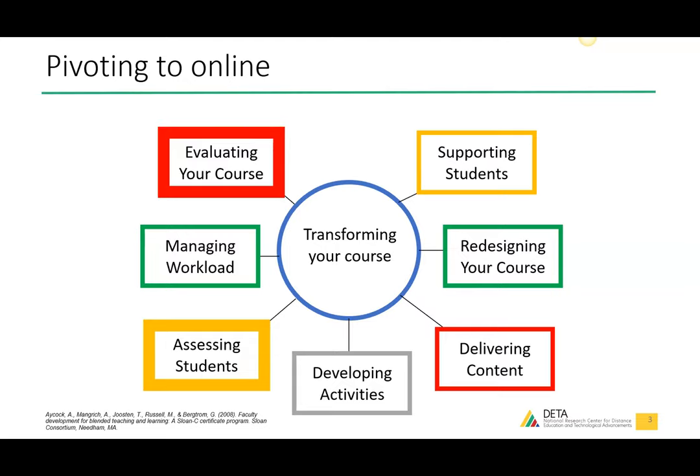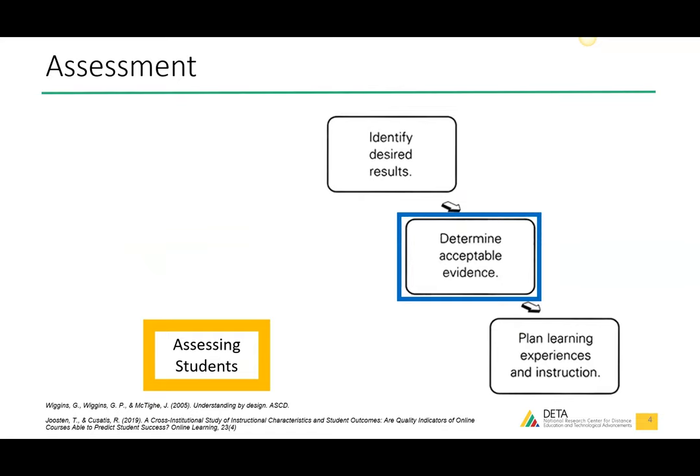On Monday I talked about Wiggins and McTighe's backwards design — their book is actually on Google Books so you don't need to purchase it. When we're talking about assessment, we have our learning objectives — what we want students to be able to accomplish by the end of the semester — and now we're thinking about how do we assess if they're able to do that. Have they learned what they needed to learn? Are they able to produce some sort of acceptable evidence of what they've accomplished?